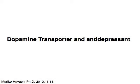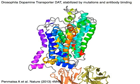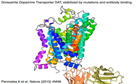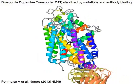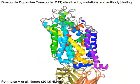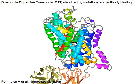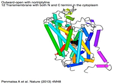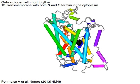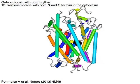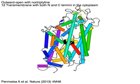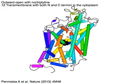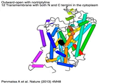Dopamine transporter and antidepressant. Drosophila dopamine transporter DAT, stabilized by mutations and antibody binding at the cytoplasmic face of the molecule. It takes an outward open conformation with a blocker, nortriptyline, bound. It has 12 transmembrane regions with both N and C termini in the cytoplasm.